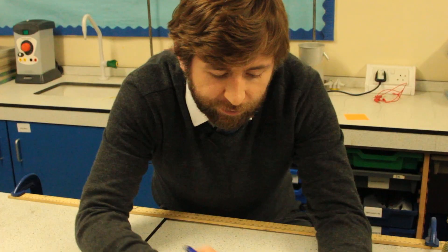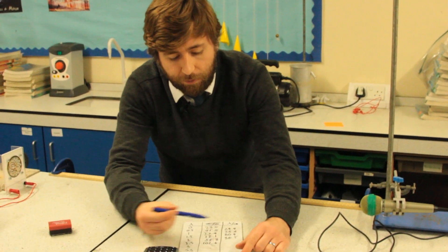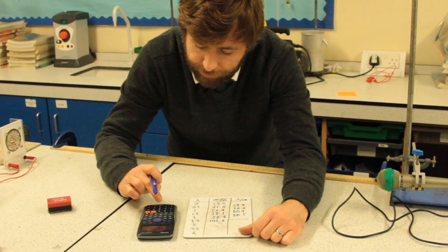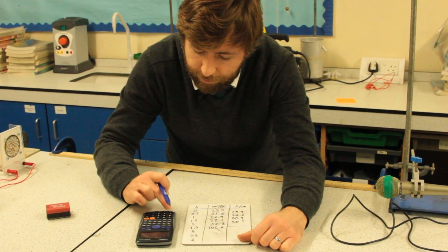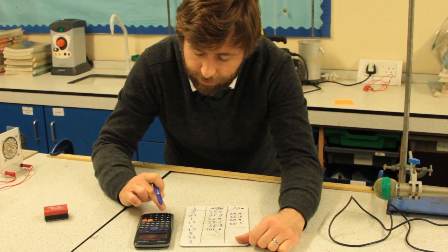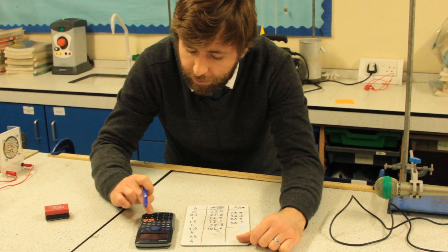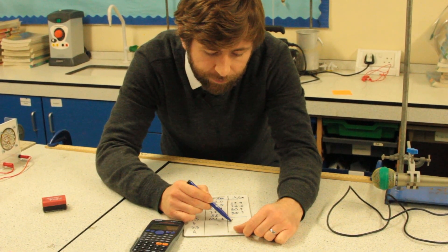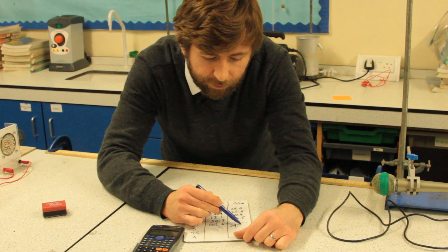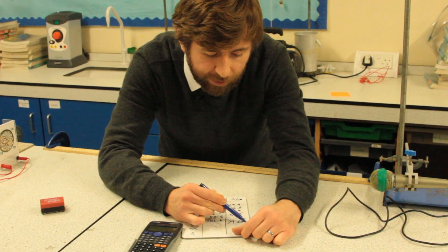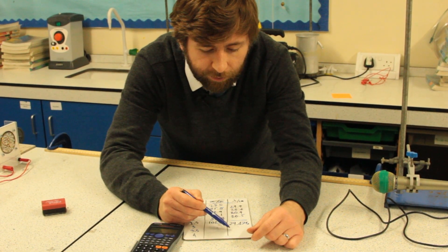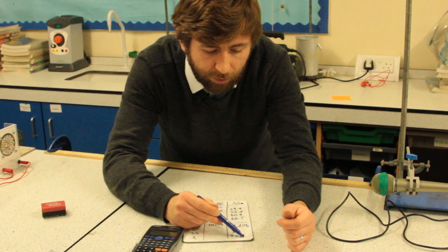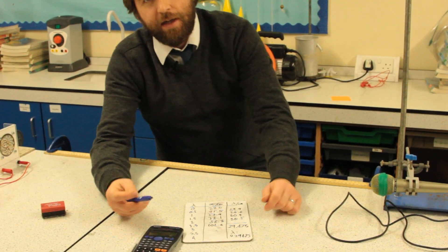Those are my four full wavelengths I've managed to measure. I'm going to calculate the average, which is 29.475 — I'll keep all those digits for now to avoid premature rounding. In metres that's 0.29475 m for our wavelength λ.